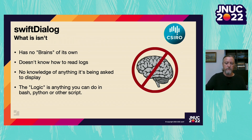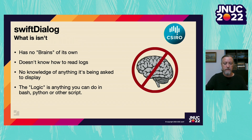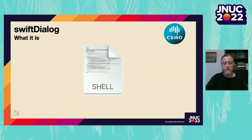This covers the basics of what Swift Dialogue is, but I'd like to touch on what Swift Dialogue isn't. It has no brains of its own. By itself, Dialogue doesn't know how to read any logs, it doesn't know what it's being asked to display, and the logic is essentially anything that you can supply via a Bash or Python script. In that way, it works very similarly to how you would currently use something like Jamf Helper.